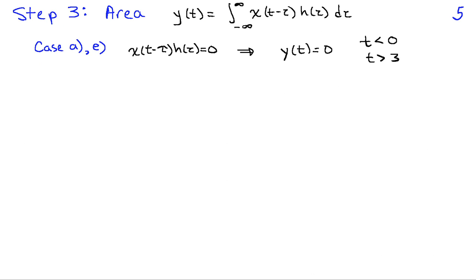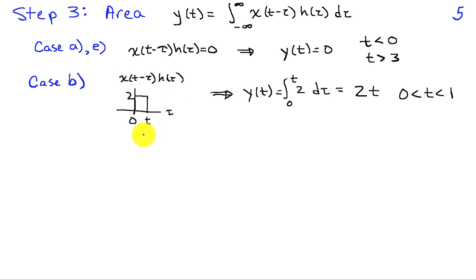We're going to move on to evaluating y(t) by finding the area under each of those products. In both cases a and e, the product was exactly 0, so the area is 0. Therefore y(t) is 0 whenever t is less than 0 or t is greater than 3. In case b, if we find the area under the signal, we get y(t) equals the integral from 0 to t of 2 dτ, which integrates to 2t. So when t is between 0 and 1, y(t) = 2t, and as t increases the area increases as well.